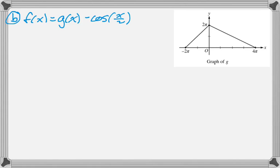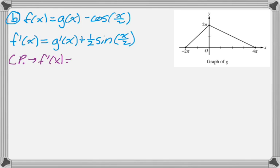In part B, we're asked to find critical points, and this is annoying, but we'll do it. So there's f of x, and again we're going to use the graph of g. So f prime we know is g prime of x, and then plus 1 half sine of x over 2. Alright, so critical points, that's when f prime is either 0 or undefined.